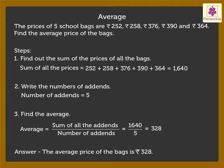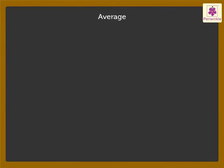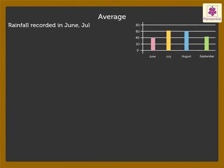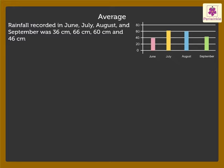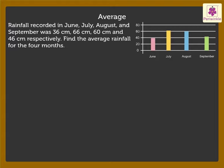Now, let us solve another example. Rainfall recorded in June, July, August and September was 36 centimetres, 66 centimetres, 60 centimetres and 46 centimetres respectively. Find the average rainfall for the 4 months.